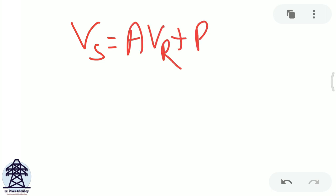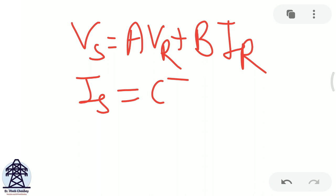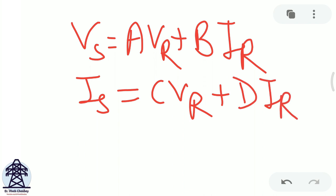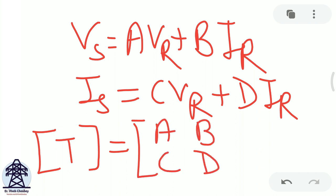To relate them, we write generic equations: VS = A·VR + B·IR, and IS = C·VR + D·IR. The question arises: what are A, B, C, and D? These are together called the transmission parameters, represented by a matrix [A B; C D]. The Ferranti effect will be analyzed with the help of these ABCD parameters, so we need to form a model of a transmission line to find them.